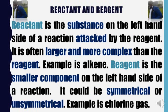That is how reaction mechanism occurs and that is the basic thing you need to know. Now, reactants and reagents: a reactant is the substance on the left-hand side of a reaction, attacked by the reagent. It is often larger and more complex than the reagent. An example is an alkene. The reagent, on the other hand, is the smaller component on the left-hand side of a reaction.